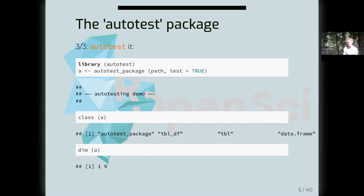The third step is simply to AutoTest the package. The only function I will focus on is one called autotest_package, which simply tests the entirety or selected parts of an entire package. Running autotest_package with the path to our dummy R package returns an object of class autotest_package, which derives from tibble, which itself derives from data frame. It's effectively a tibble data frame with a dimension in this case of one row and nine columns.